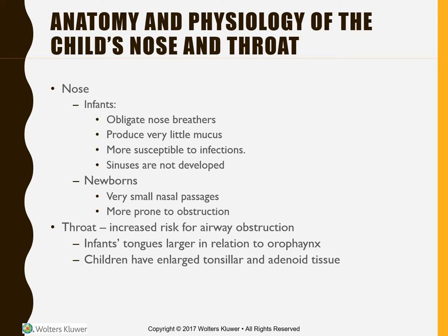As we look at their throat, they are at increased risk for airway obstruction. An infant's tongue is large in relationship to their oropharynx, which can lead to airway obstruction. Children also have very enlarged tonsillar and adenoid tissues, which can also lead to airway obstruction. If they are large enough to cause obstruction, we may need to think about removing the tonsils and the adenoids.